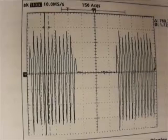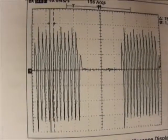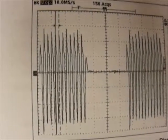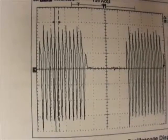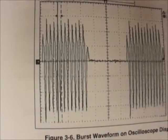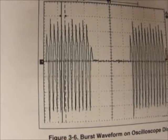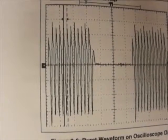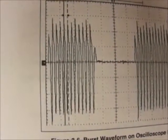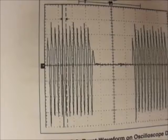A higher than normal Crest Factor — such as 1.41, which is normal for sine waves — implies that there is some degree of impacting going on, such as component wear, high impedance, noise, waveform distortions, etc.